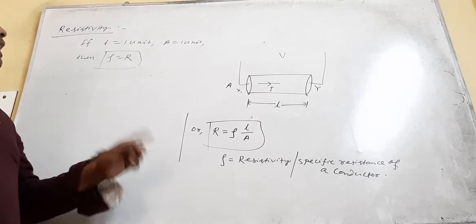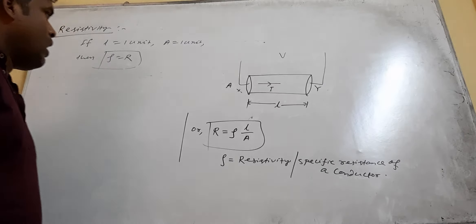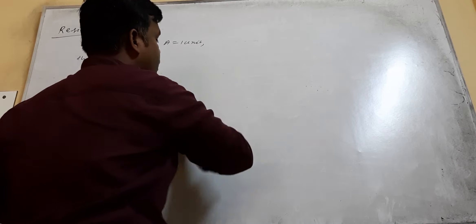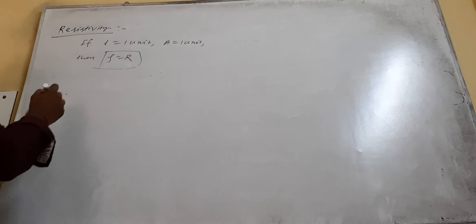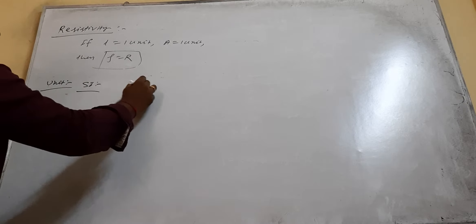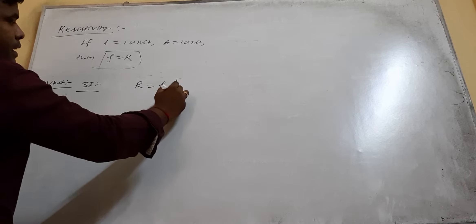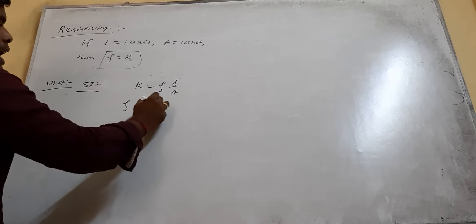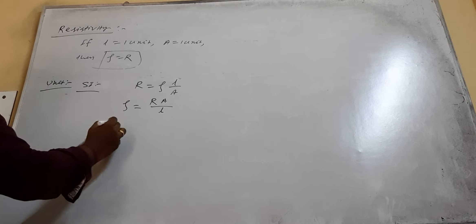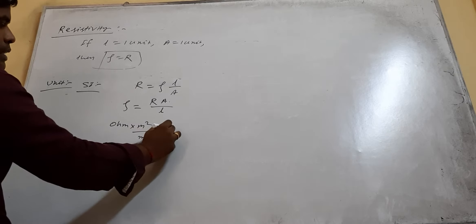Now, what is the unit of resistivity? Since ρ equals R times A by L, the unit of resistivity is Ohm multiplied by meter squared divided by meter, which gives Ohm·meter (Ω·m).